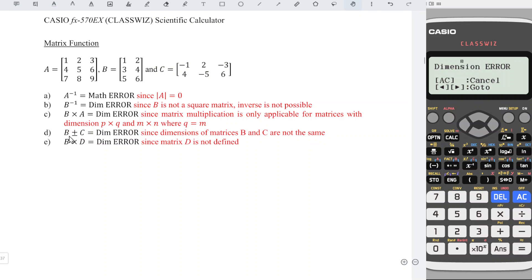Next, Part D, B plus or minus C. Basically, we should obtain the same dimension regardless if it's plus or minus, so we just try for plus. Press AC, option matrix B, 4, plus option matrix C. And we press equal. Dimension error again because B and C are of different dimension.